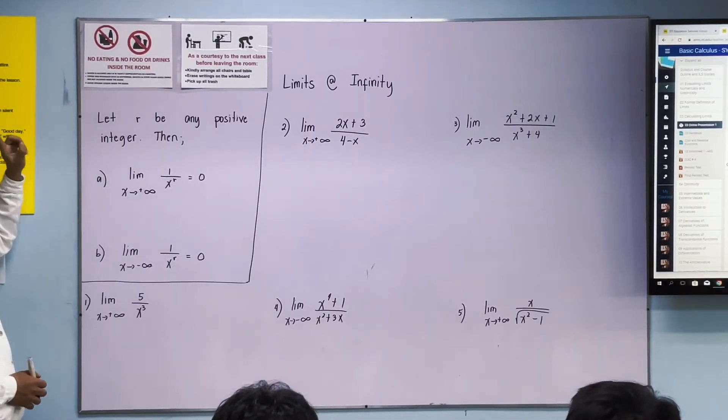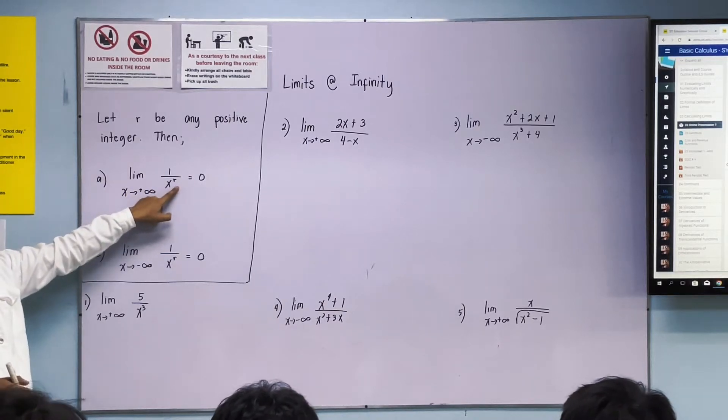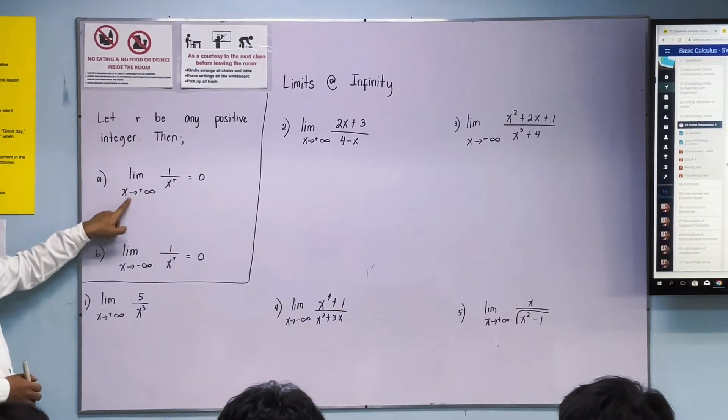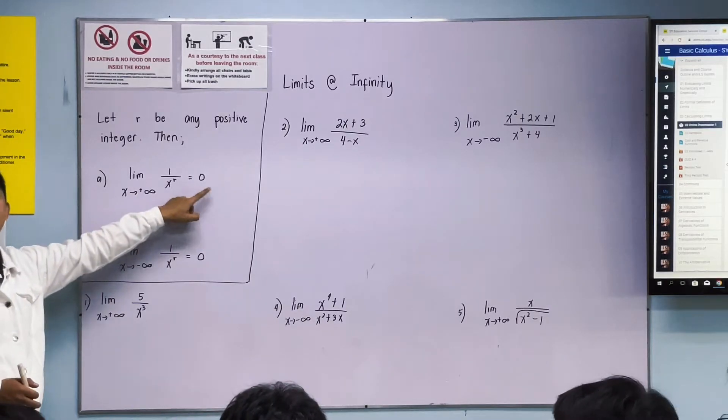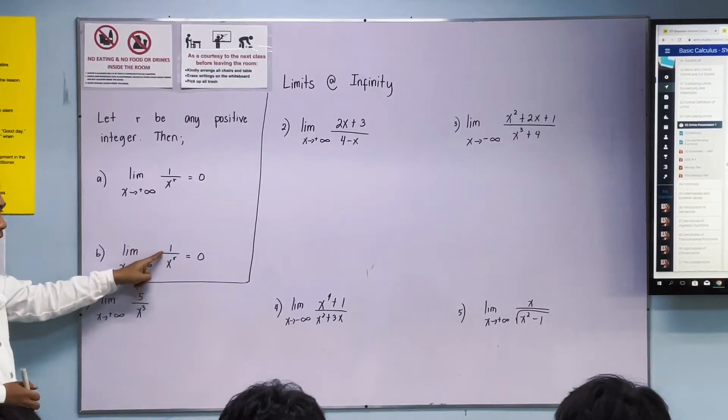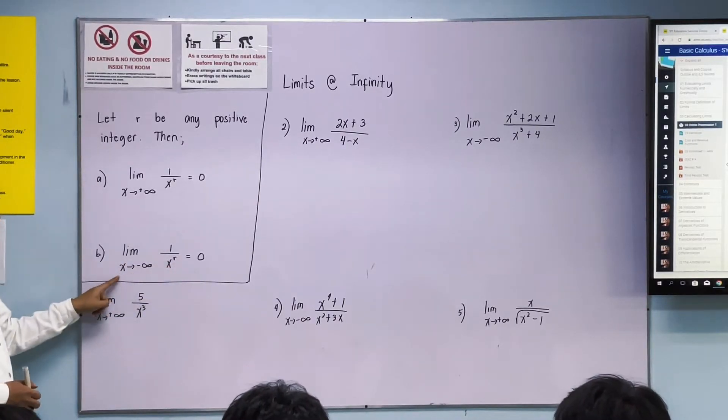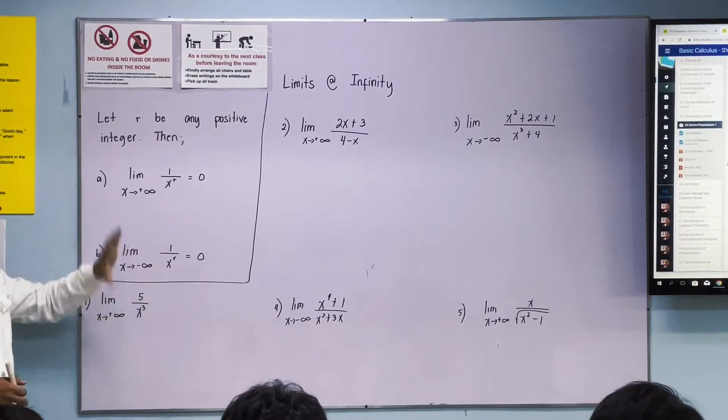First theorem: limit of 1 over x raised to R as x approaches positive infinity, that is equal to zero. And limit of 1 over x raised to R as x approaches negative infinity is still zero. So, it's the same.